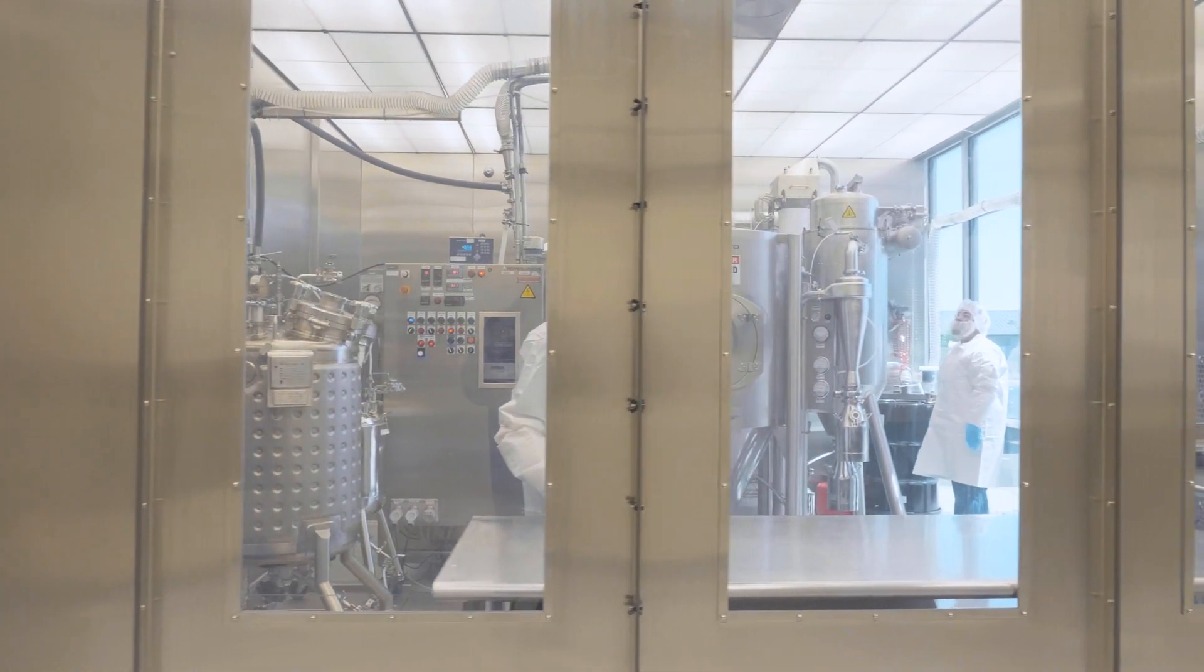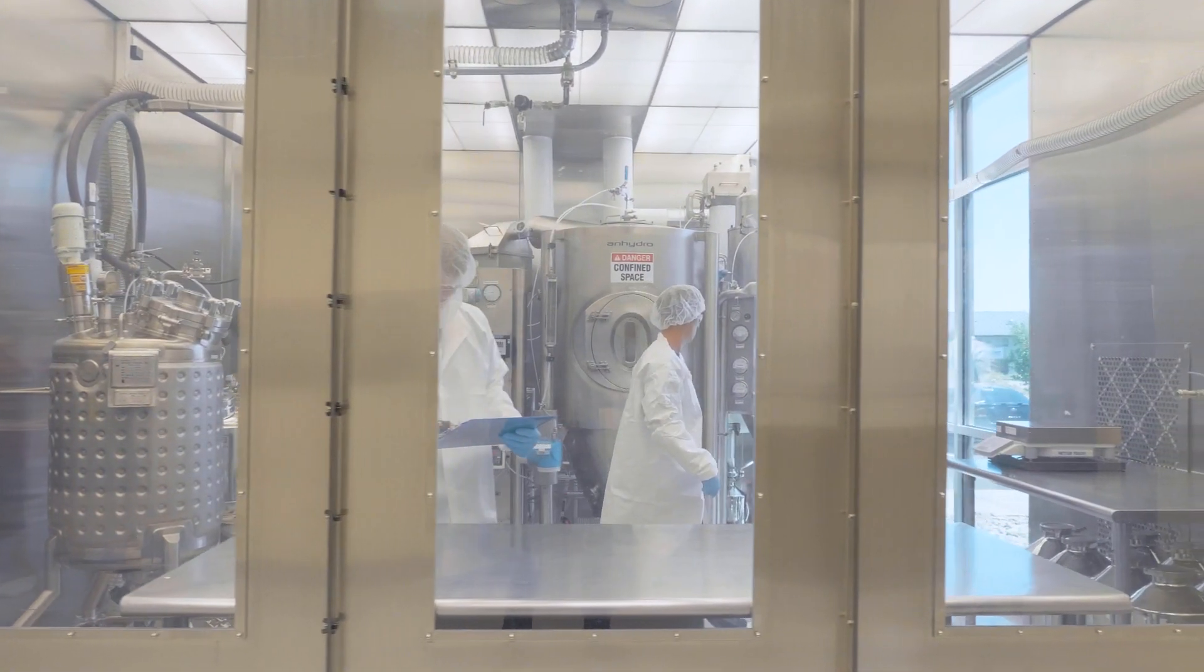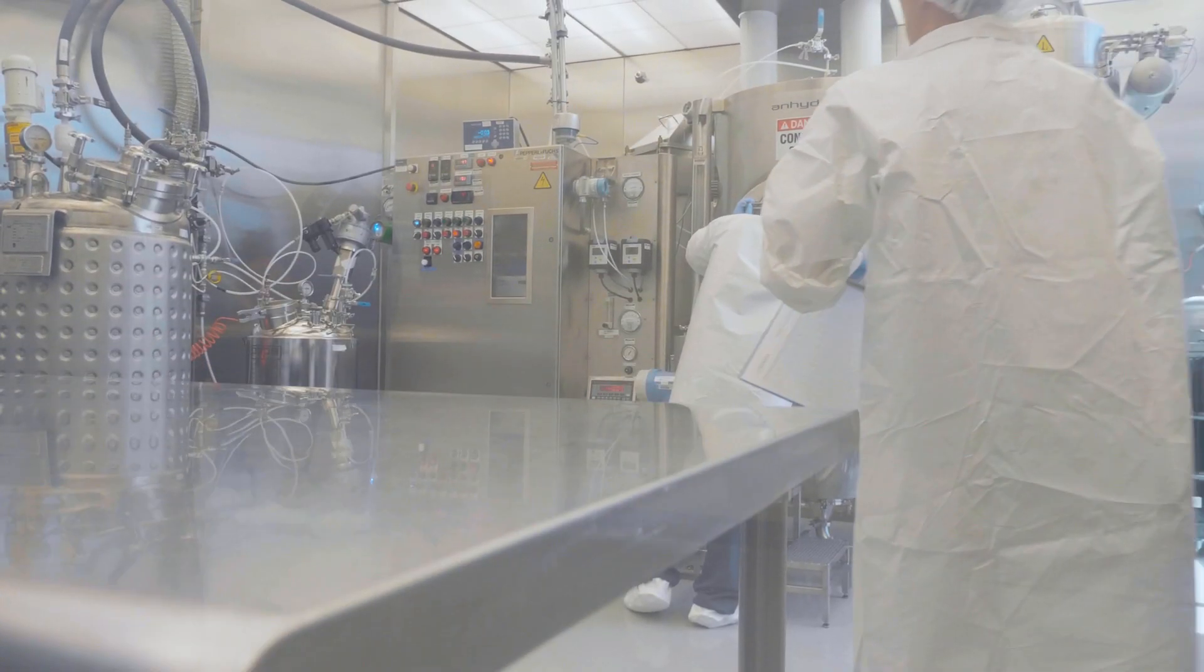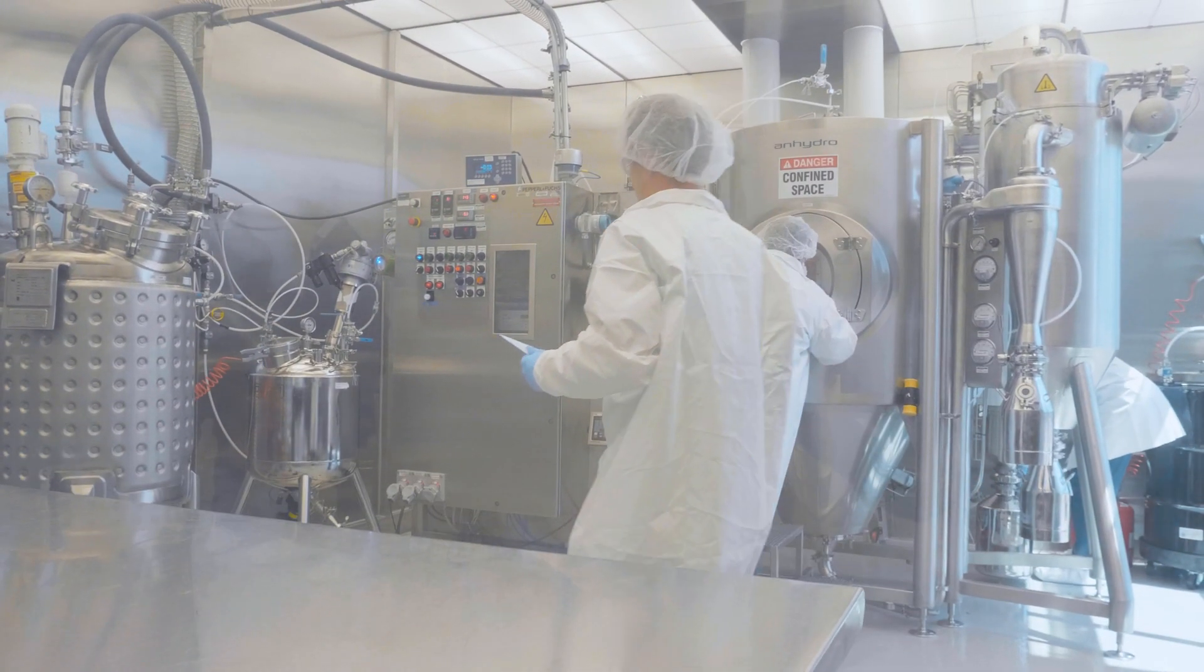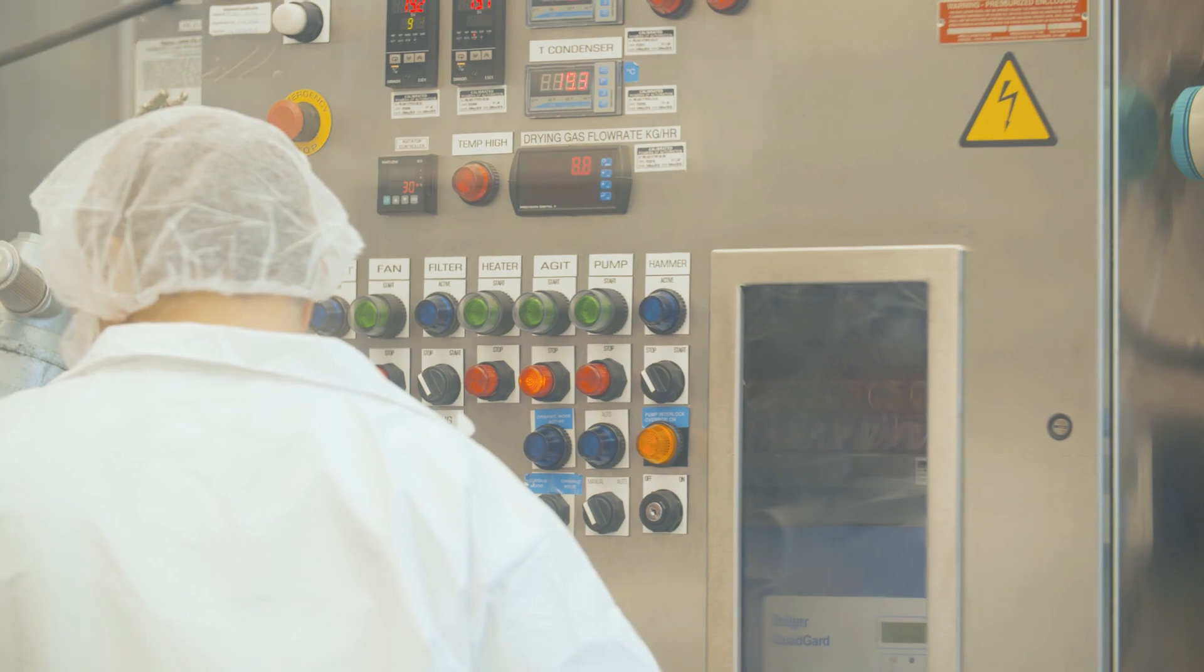The pilot scale GMP at the Bend, Oregon site consists of two pilot scale spray dryers. One is an Anhydro MS 150, another one is a GEA Mobile Miner. These are capable of doing tens of kilograms of spray-dried intermediate.